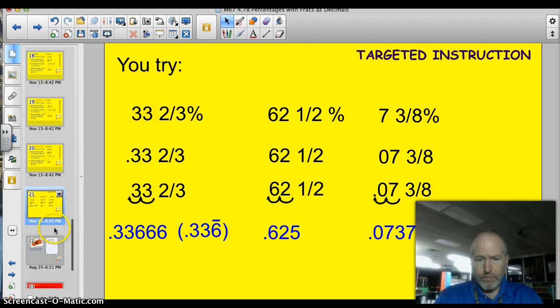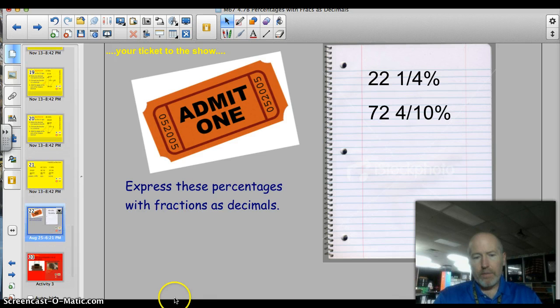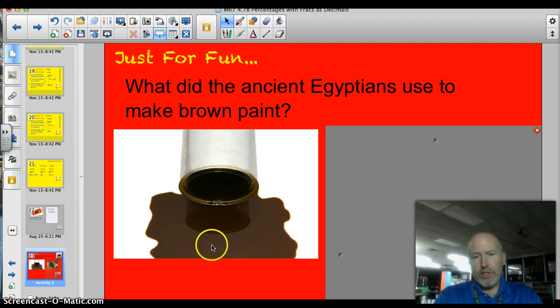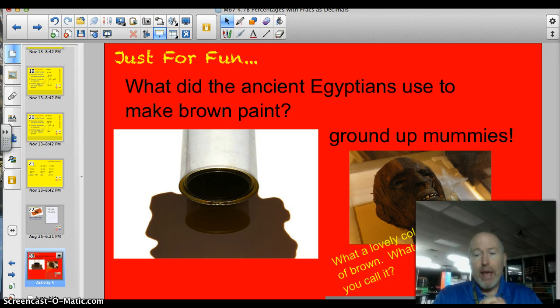Time for the ticket to the show. Right here. 22 and a quarter percent. 72 and four tenths percent. Express these percentages with fractions as decimals. You ready for the trivia question? The question was, what did the ancient Egyptians use to make brown paint? The answer? Ground up mummies. Yeah. Ground up mummies. Can you imagine this conversation? Oh, what a lovely shade of brown you have on your walls. What do you call it? I call it Uncle Fred. Hope you enjoyed my humor. Enjoy. Have a good night. Thanks for watching.